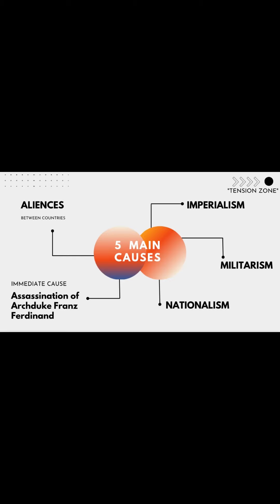The first one being alliances between the participating countries. There were two main alliances that I'm going to talk about later. Then there's a part that I like to call the tension zone between imperialism, militarism, and nationalism. And then we have the last one, which was the immediate cause — the assassination of Archduke Franz Ferdinand. There's also a fun fact that normally they're called the four main causes, and then the assassination is the immediate cause, put in separately.